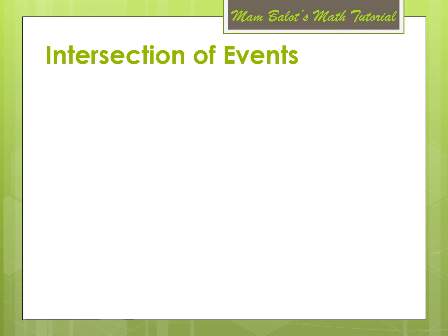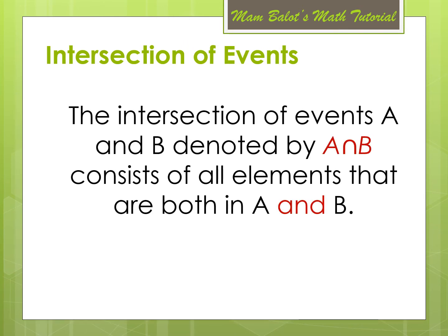How about the intersection of events? The intersection of events A and B, denoted by the symbol A∩B, consists of all elements that are both in A and B. The keyword for the intersection is the word AND. So, if you find the word AND, it signifies that it is an intersection of events.